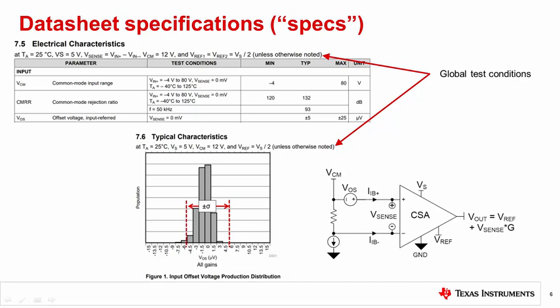The maximum and minimum specifications can be referred to as limit specs, or max specs, and are more important than the typical. Max specs are guaranteed at their testing conditions shown. They can be guaranteed through test, a statistical characterization, and or design. So for this part and its specifications shown, you will never find a device with an offset greater than the maximum of plus or minus 25 microvolts given the device is operating with the exact same testing conditions.